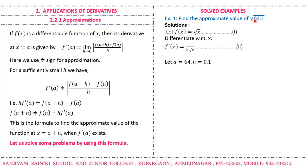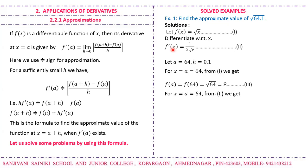We have to locate a number nearer to 64.1 whose square root we know. Obviously we choose 64, since √64 = 8. So we choose a = 64 and h = 0.1. Substituting x = a into both f(x) and f'(x), we get f(a) = 8 and f'(a) = 1/16.